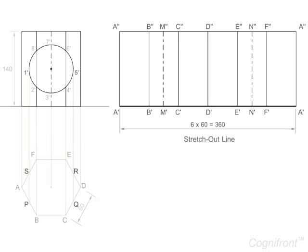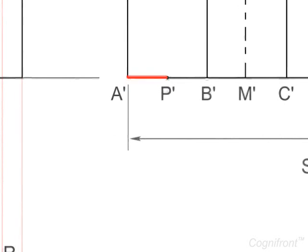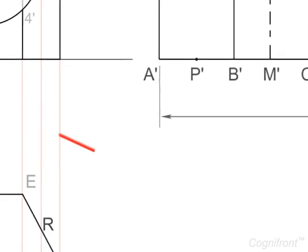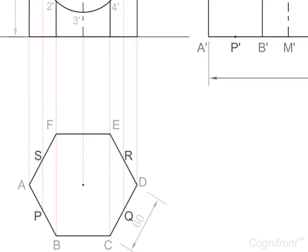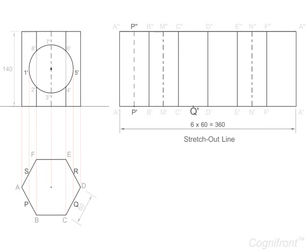On line A-A- locate point P- such that A-P- equals AP. Similarly, locate point Q-R-S- and draw vertical lines from these points.